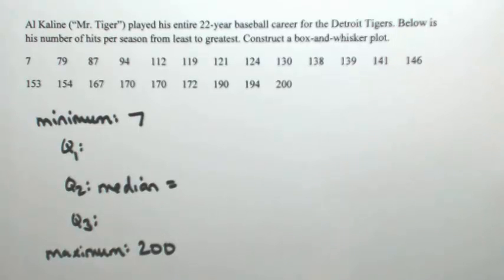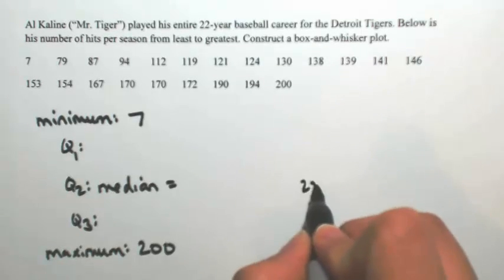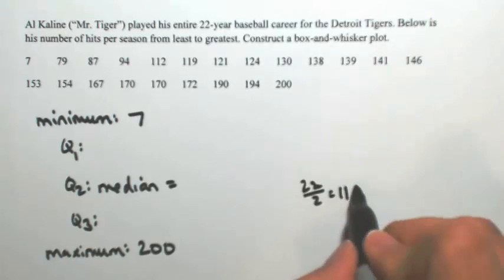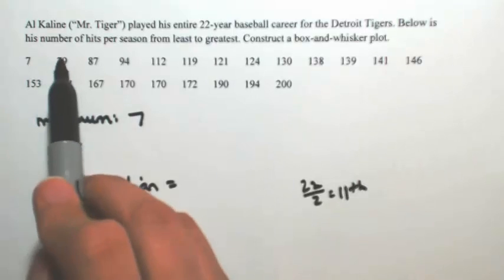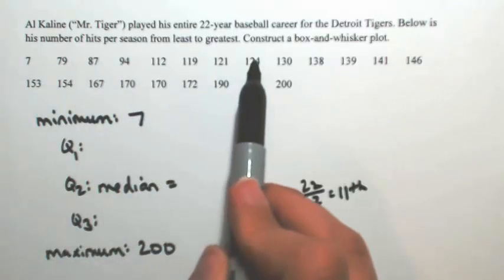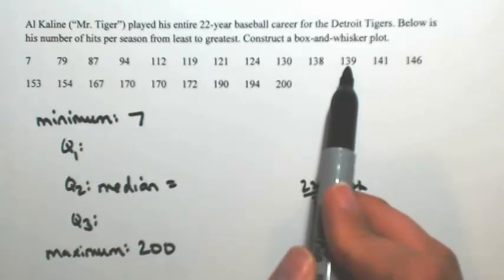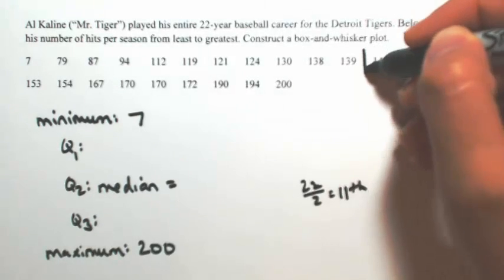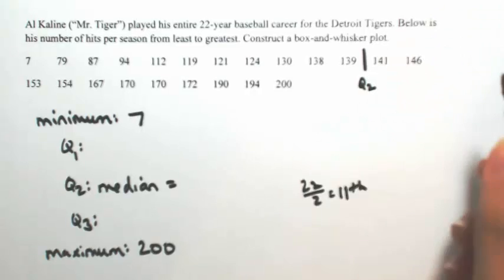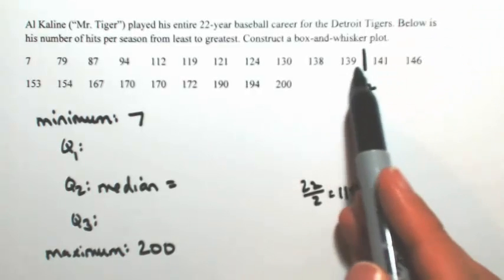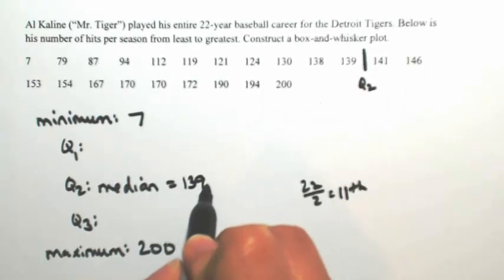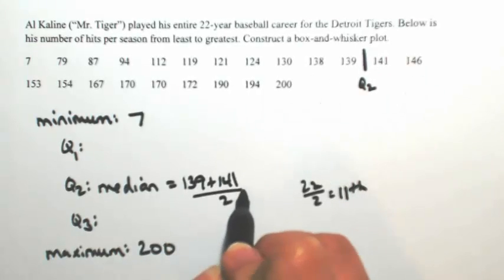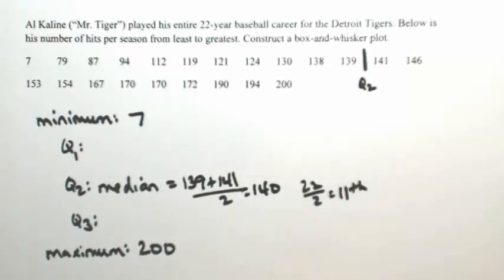I'm going to divide 22 by 2 to figure out where that middle number is—the 11th number. [Counts to 11] We're going to average out the middle two numbers. So that means in between is Q2. Between 139 and 141, so 139 plus 141 divided by 2 is 140. So Q2 is 140.